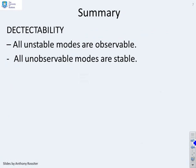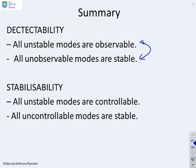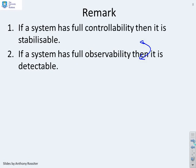In summary: detectability means all unstable modes are observable, and all unobservable modes are stable — these two statements say the same thing in different ways. Stabilizability means all unstable modes must be controllable, or equivalently, all uncontrollable modes must be stable.